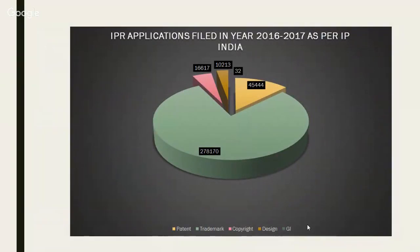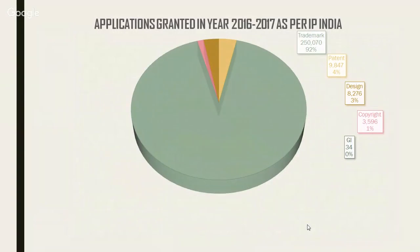Looking at the total number of applications filed under IP at the Indian Patent Office in 2016-17: trademarks had the maximum filings, followed by patents, copyright, design, and GI with the minimum. Of filed applications that received grants: trademarks led at 92%, patents at 4%, designs 3%, copyright 1%, and GI at approximately 0.001%.